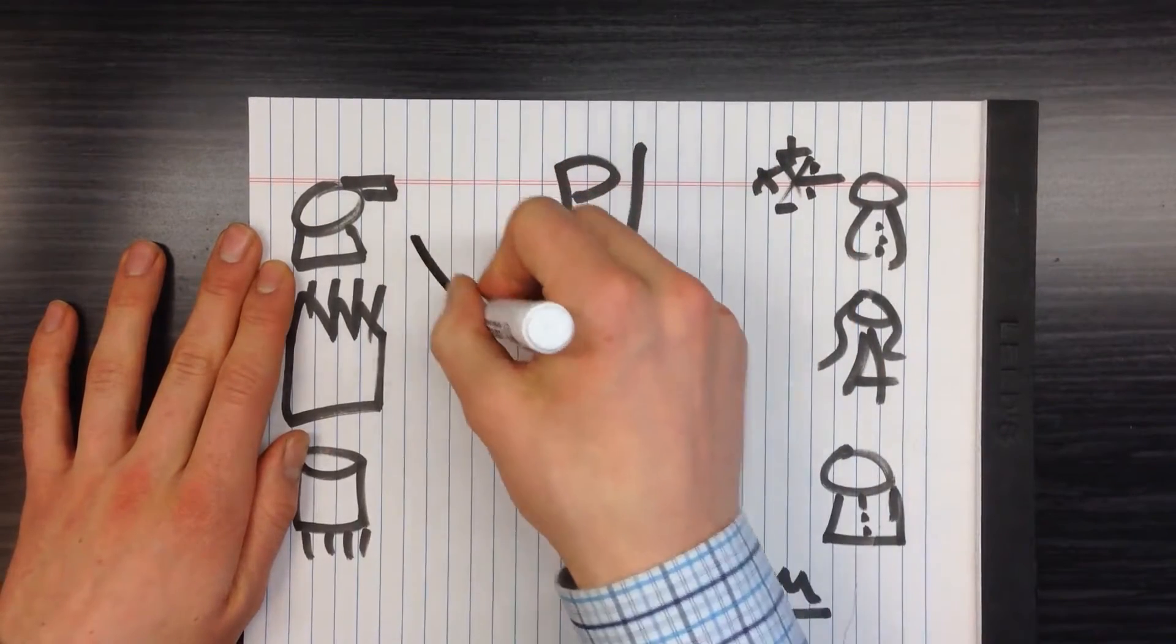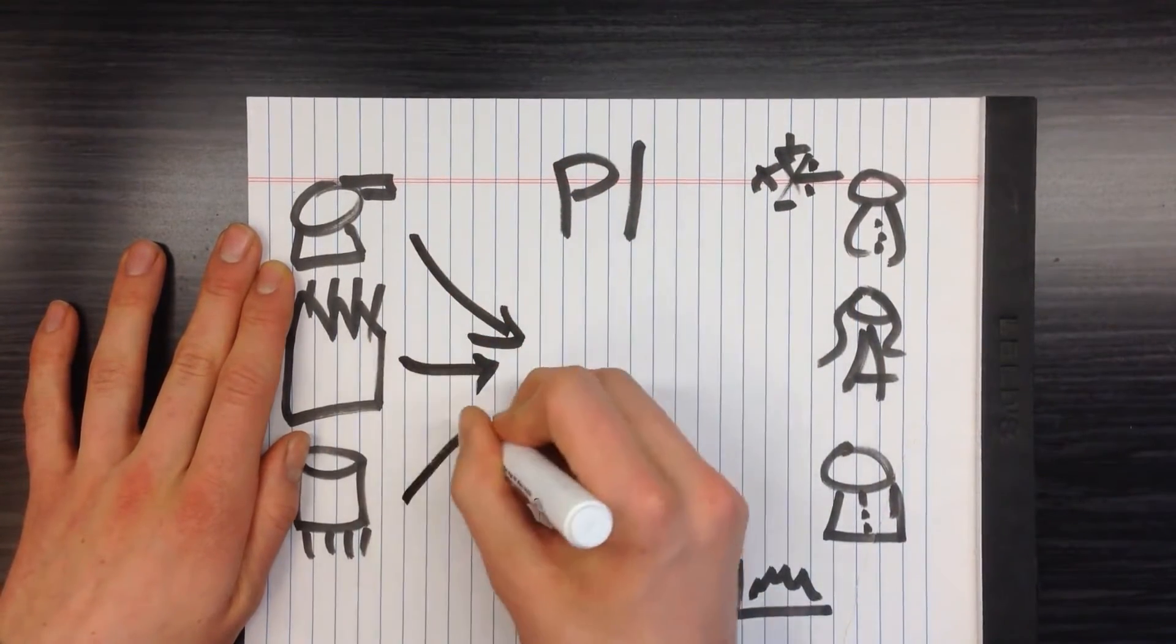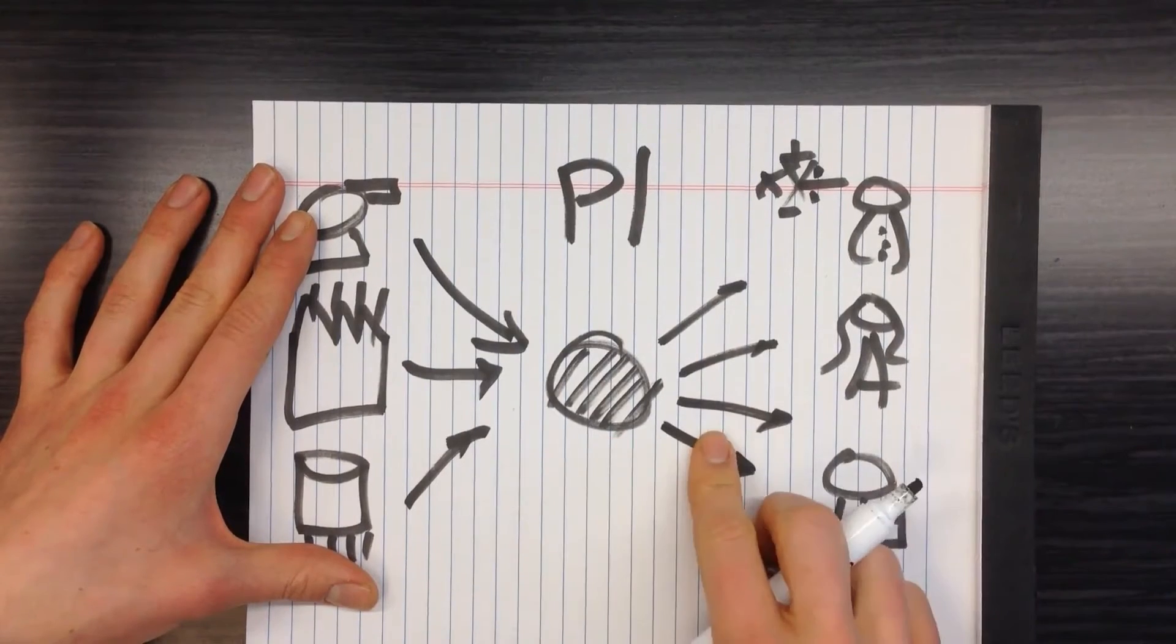The PI System connects to any source of data, anywhere it needs to go, all from that one place.